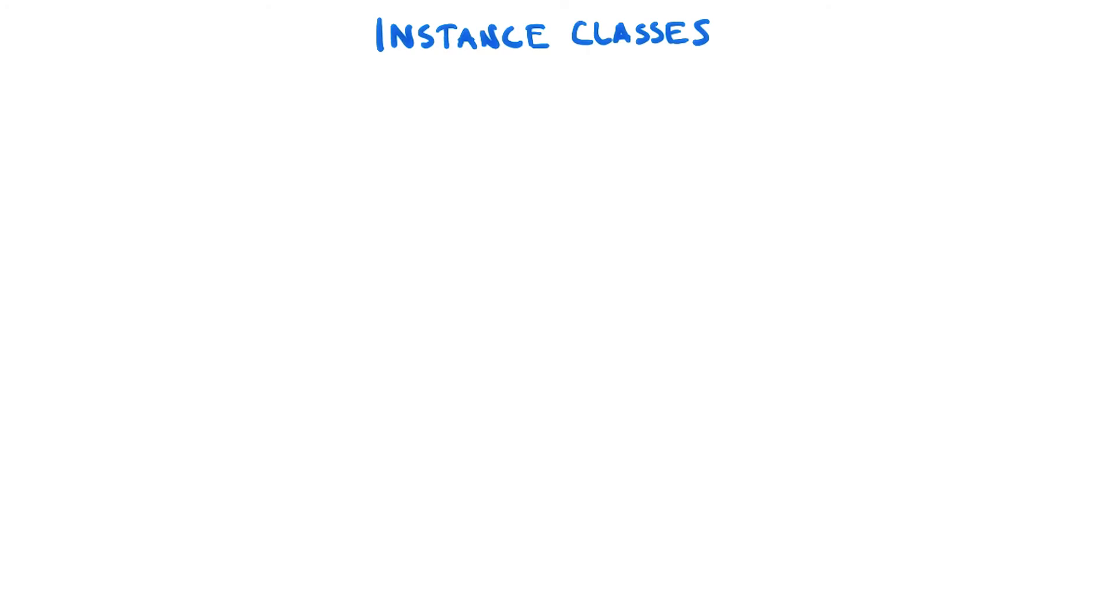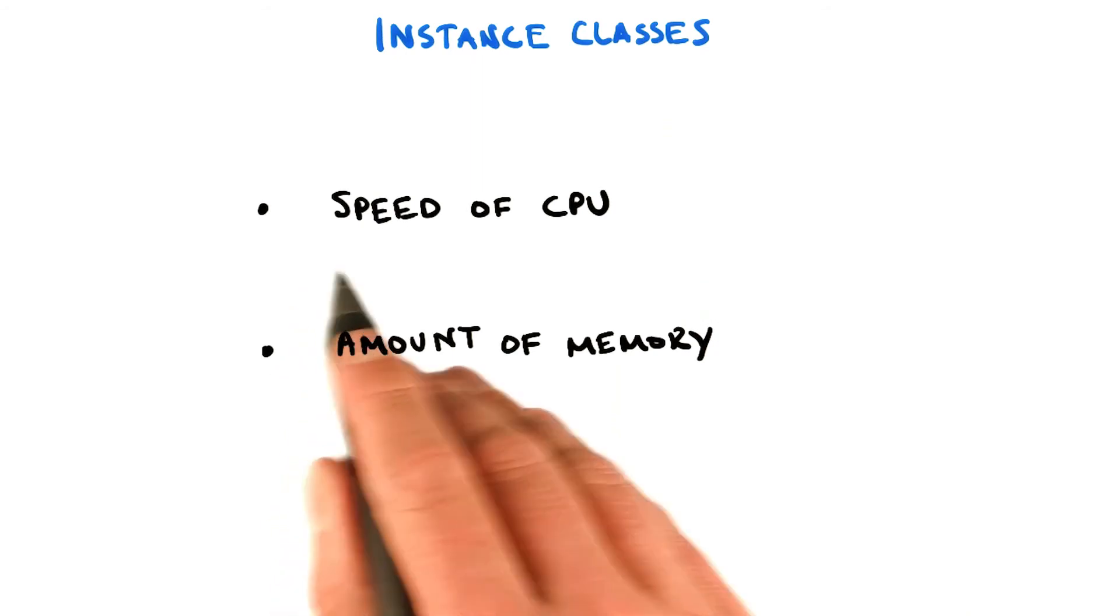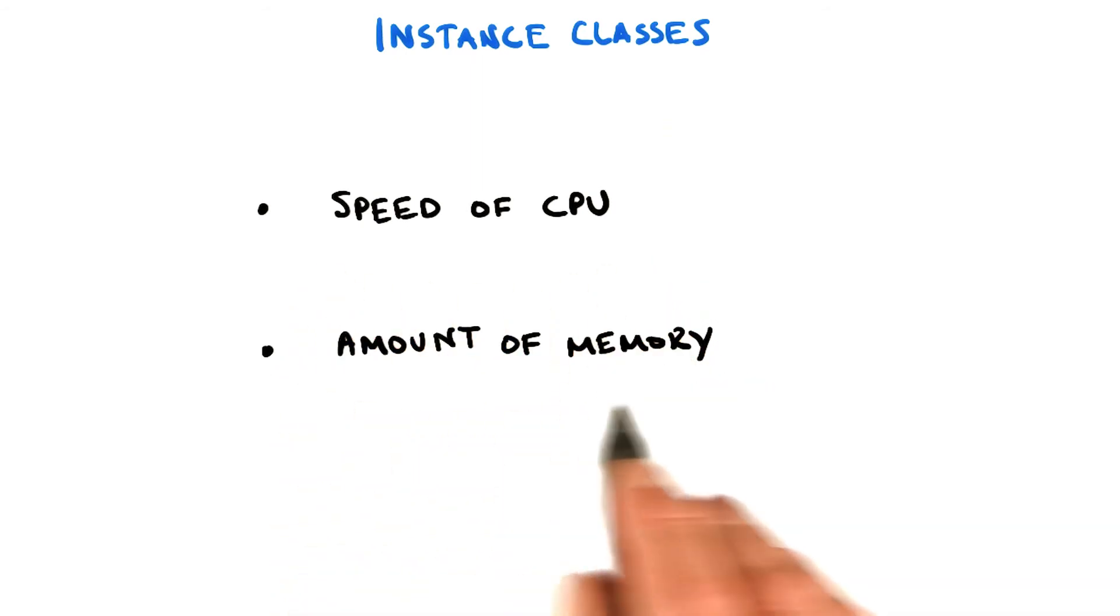Finally, both manual and automatic scaling have a common configuration element, which is the instance class. The instance class specifies the speed of the CPU and the amount of memory to use for each of the instances started. Check out the developer documentation for more details on the options available.